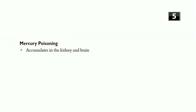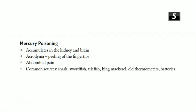Moving on to mercury poisoning. Mercury accumulates in the kidneys and brain. It causes peripheral neuropathy, neurological problems like tremor, neuropsychiatric problems like excitability and insomnia, and acrodynia — peeling of the fingertips. Note that acrodynia is also seen in Kawasaki disease. Abdominal pain may occur, but the primary organs affected are the kidney and brain.